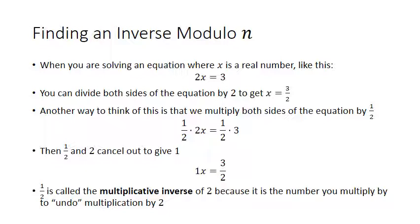Now that we've learned how to do fast exponentiation — which allows us to find really large numbers modulo another number — let's talk about how to solve equations. This is another thing that's important for encryption and decryption. Remember we talked earlier about needing functions that are invertible in order to do our encryptions. Let's review solving an equation where x is a real number: if 2x equals 3, you solve by dividing both sides by 2 to get x equals 3 over 2.